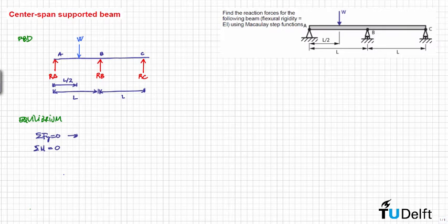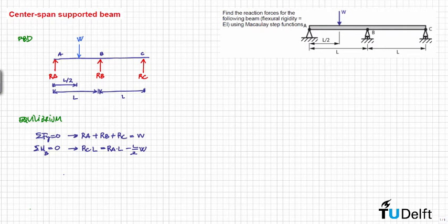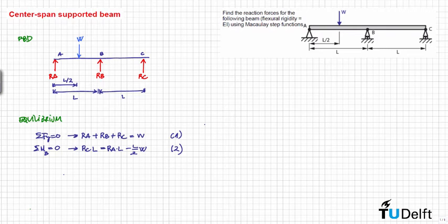From the first equation we get equation one, and by calculating moments at point B we get equation two. But as you can see we have three unknowns, so this is obviously a statically indeterminate problem.